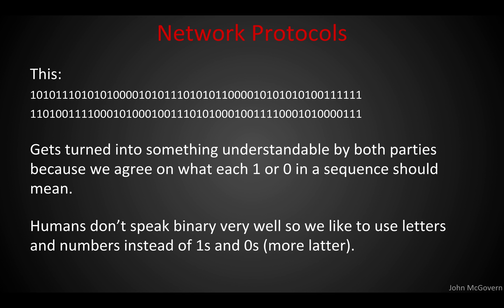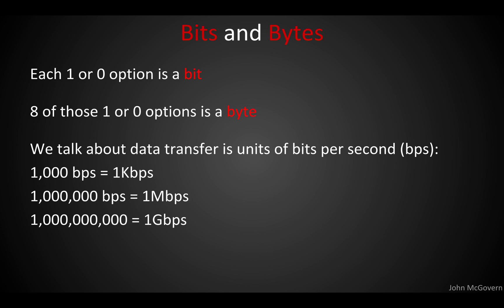Humans obviously like to use numbers in the decimal number system, a 10-based number system. Binary is just a 2-based number system with only two options. We'll call each 1 or 0 option a bit, and if we put 8 of those together, we'll call that a byte. In networking, we talk about data transfer in megabits, kilobits, or gigabits per second — even up to 10 or 100 gigabit links.